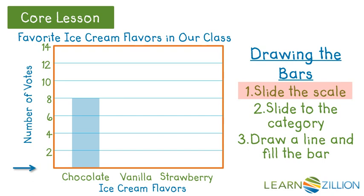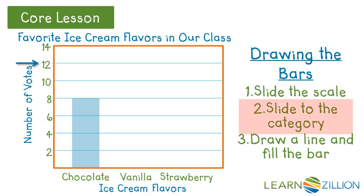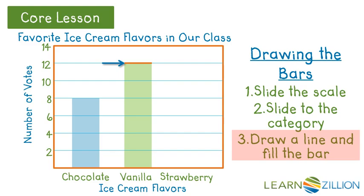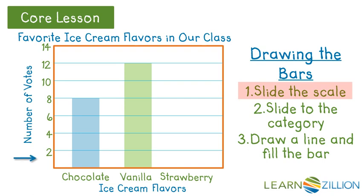Now we do the same for vanilla. Start from zero — this lower corner is always at zero. We go up to twelve, since twelve students voted for vanilla. Slide over to the vanilla category, draw a line, and fill in the bar. Our increments on here are in two.